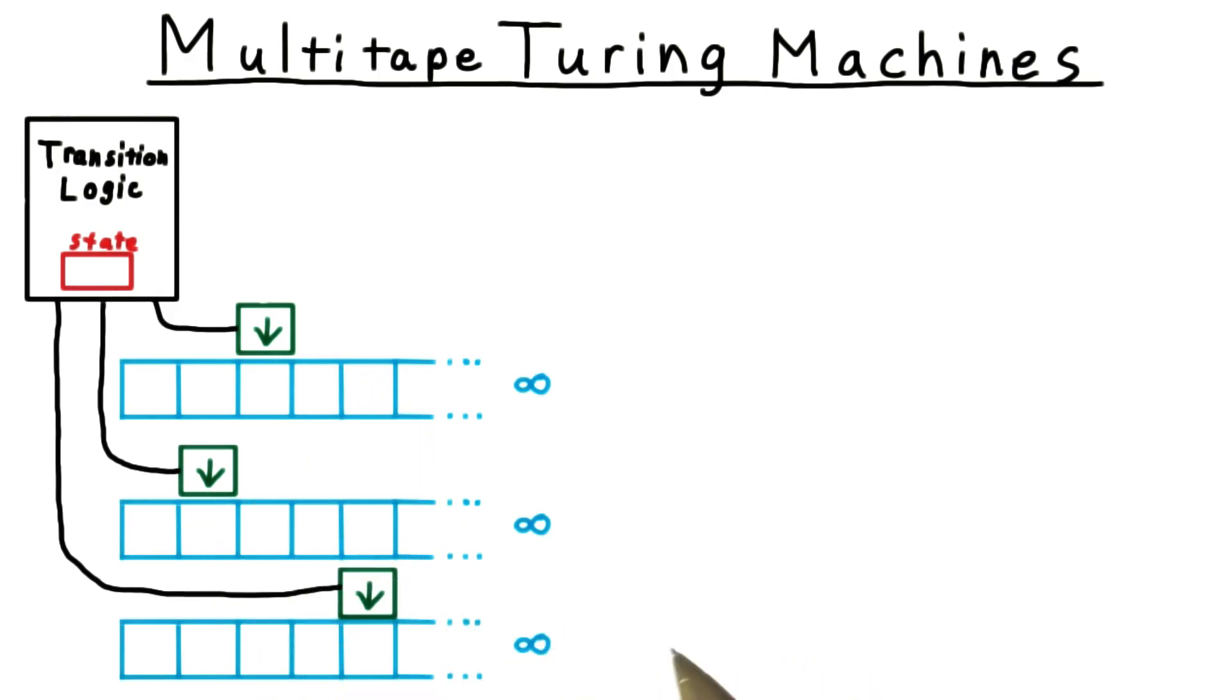With a one tape machine, we always force the head to move, but if we required that condition for multi-tape machines, the differences in head positions would always be even, which leads to awkwardness in programming. So it's better to allow the heads to stay put.